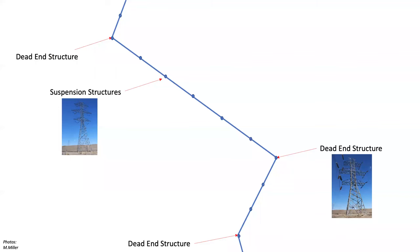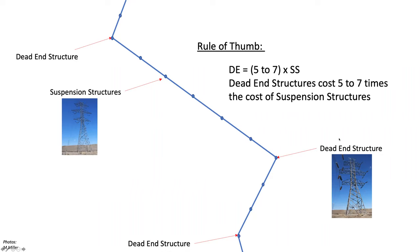In general terms, there are two basic structure types, and this is important because of the cost. There's suspension and there's dead end. The rule of thumb is that dead end structures are five to seven times the cost of suspension structures. Hence, that's why utilities don't like to make modifications to the line right-of-way arrangement or alignment — putting in more and more angles and breaking up the line costs more money. That's why there's generally a pushback for any changes to certain routes.